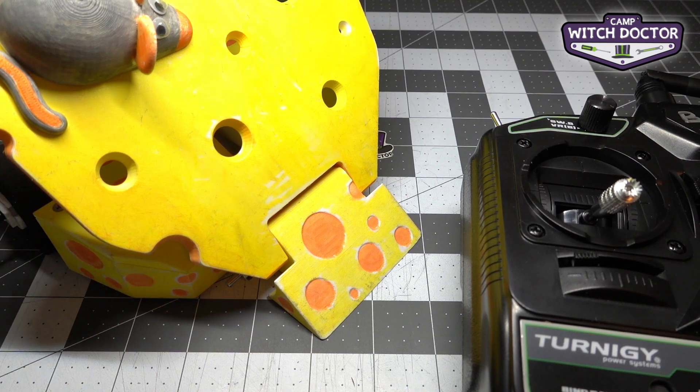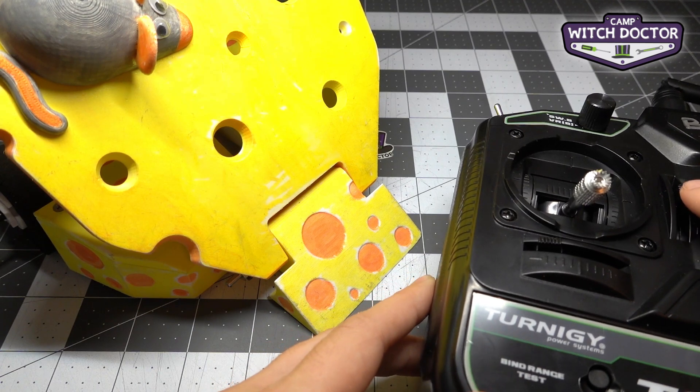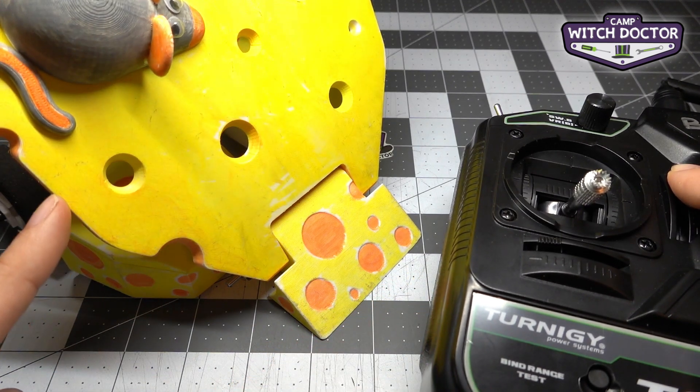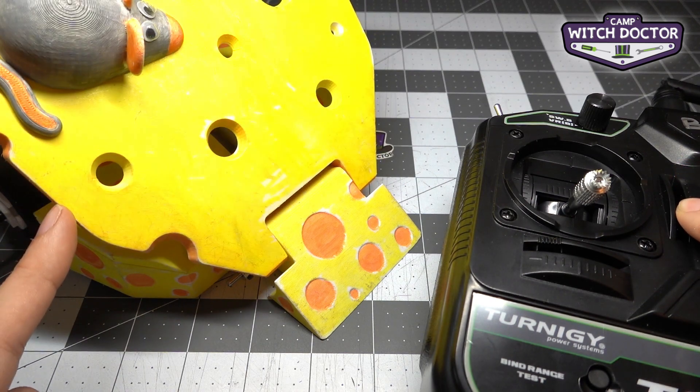All right that looks great. Now if I want to adjust the position of this flipper arm I can use the trim to do that. So if I slide the trim up you saw that it adjusted this flipper arm up. Now if I move it down, it adjusts the flipper arm down.